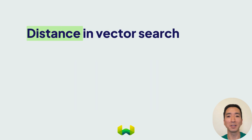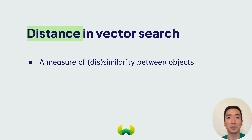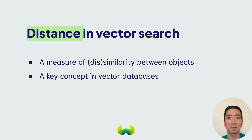We also introduced the concept of a distance. As we mentioned, vector databases retrieve objects based on similarity. A distance indicates how similar — or more precisely, how dissimilar — a pair of objects are. This is a key concept in vector search and vector databases.